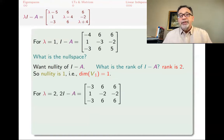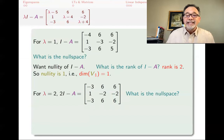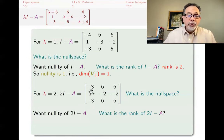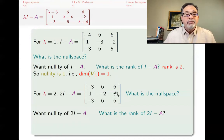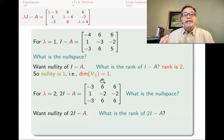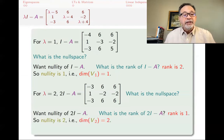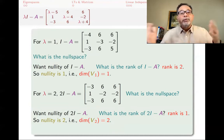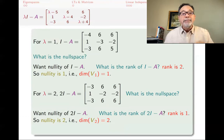For lambda equals 2, I find 2I minus A. Again the rank cannot be 0 or 3. In this case, examining the rows, the second row has the other two rows as multiples of it — so there is only one linearly independent row. The rank is 1. By rank-nullity, the nullity is 2, so the dimension of V2 is 2. I can find two linearly independent eigenvectors for lambda equals 2. Combined with the one from lambda equals 1, by the general theorem these three eigenvectors are linearly independent, so A is diagonalizable.